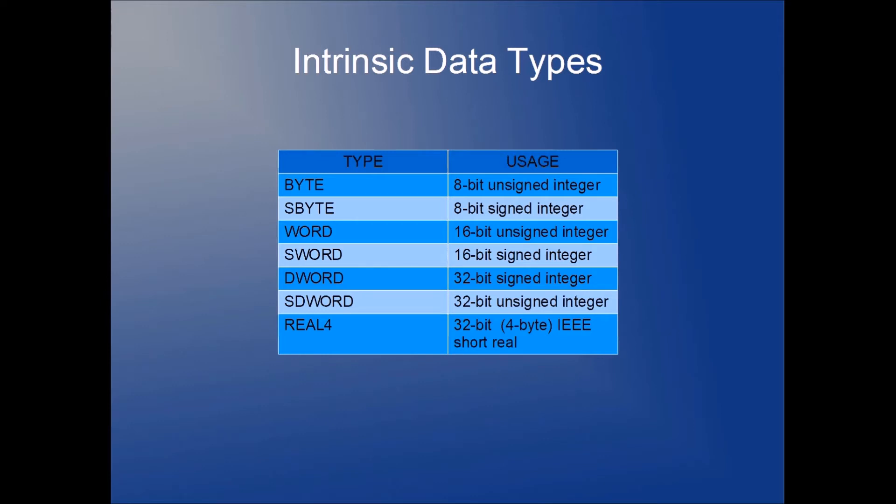A word is a 16-bit unsigned integer. An S word is a 16-bit signed integer. D word, which stands for double word, is a 32-bit signed integer. And S word is a signed double word, which is a 32-bit unsigned integer. And the one floating point data type that we'll look at is real4, which is a 32-bit IEEE short real.